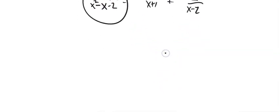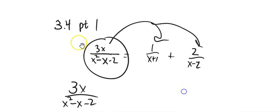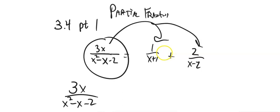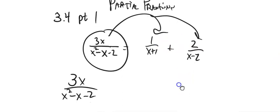So let's do it: 3x over x squared minus x minus 2. This method — this rewriting — is called partial fractions.